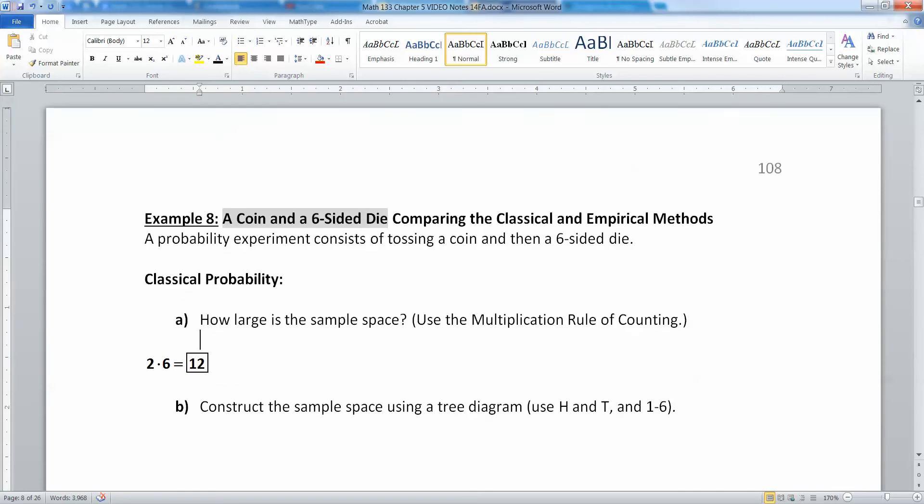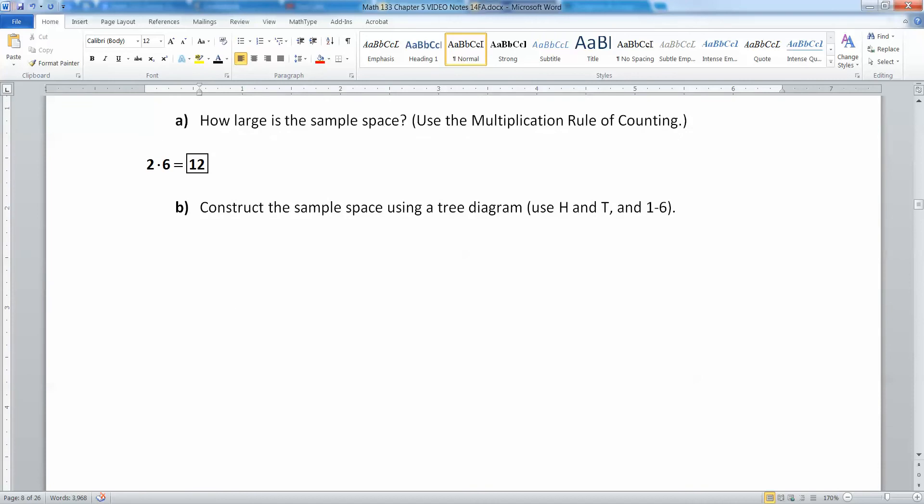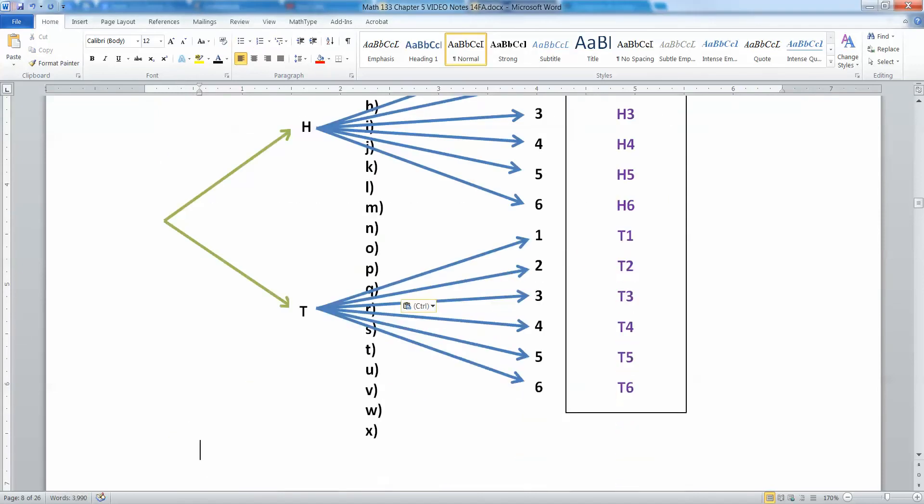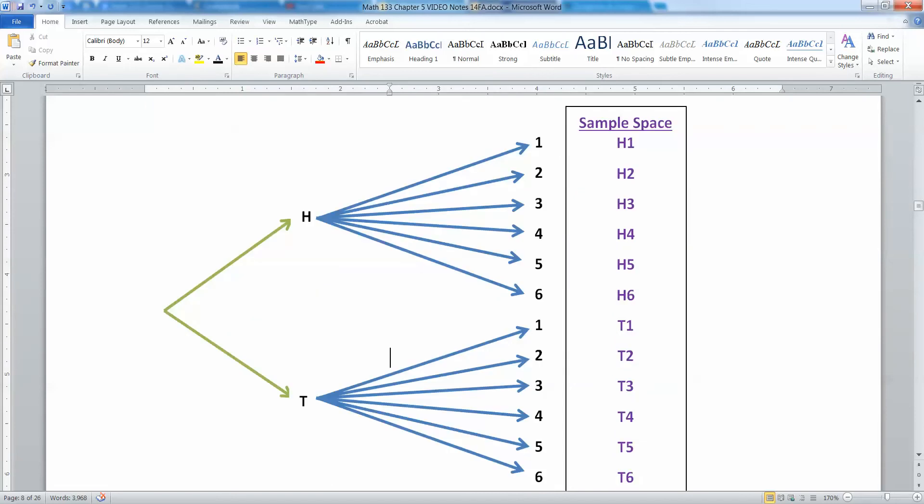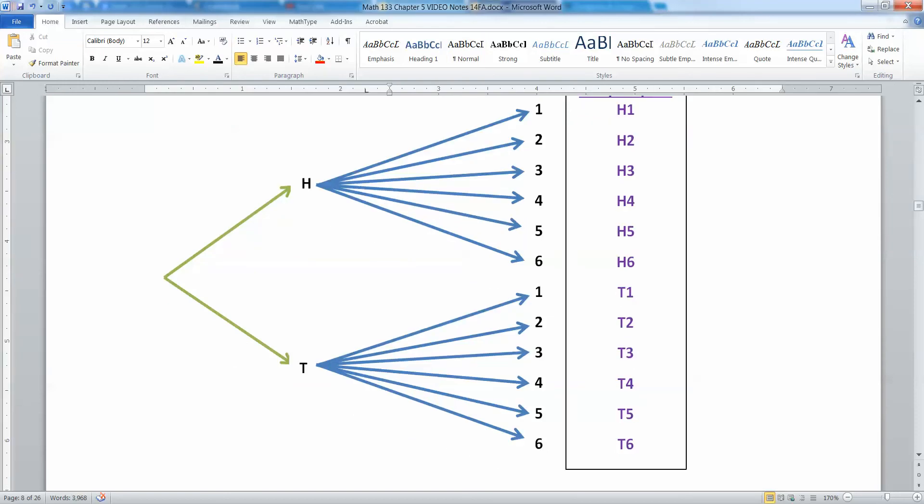Now we want to construct a sample space using a tree diagram. And often when you're doing tree diagrams to create your sample space, you will simplify your life. So you don't want to write heads and tails all the time. So write H and T. So take a moment. Try to do that. And there it is. So you can see the green is my first event. So I have the option of a head or a tail. And then once I have the head, I have six branches that can come off from that.